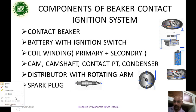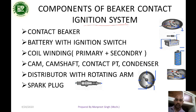First we discuss the parts of the contact breaker ignition system. Number one is the contact breaker, which consists of a condenser. This is the condenser, and this is the cam which is connected to the camshaft. This type of switch shown in red color is called the contact breaker switch.